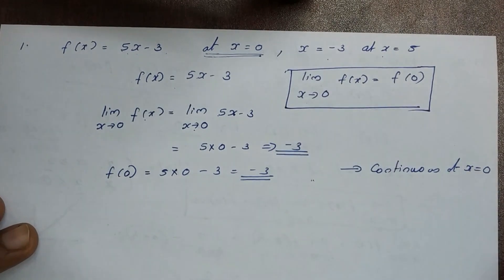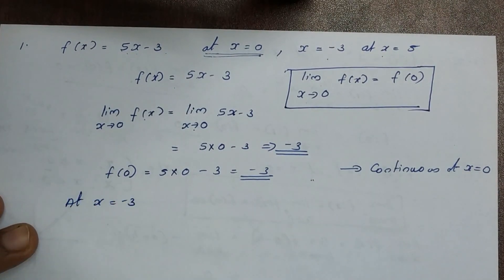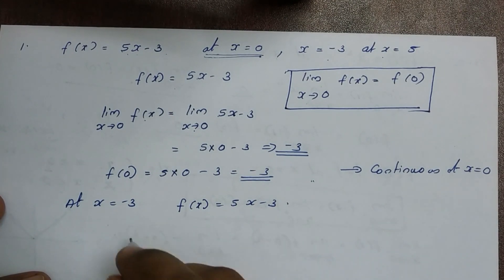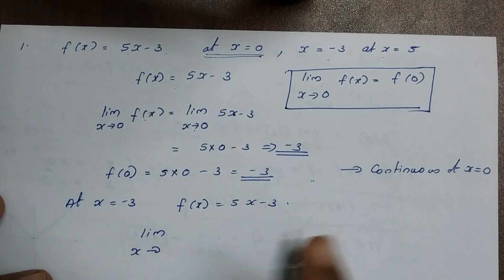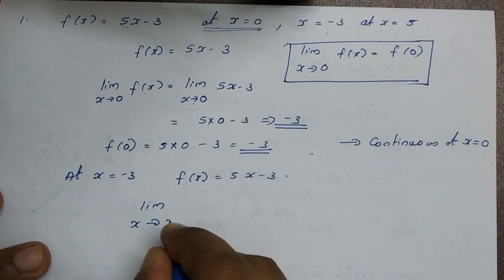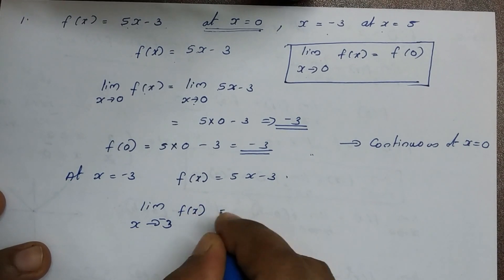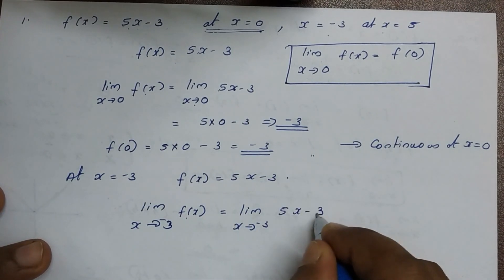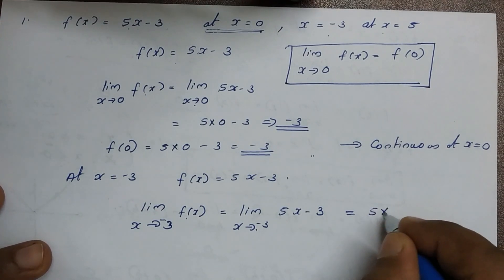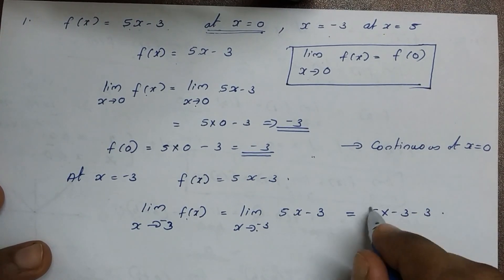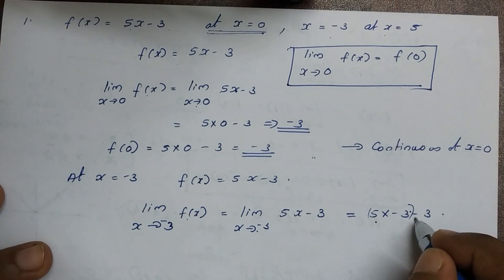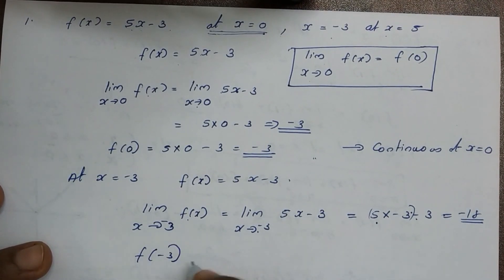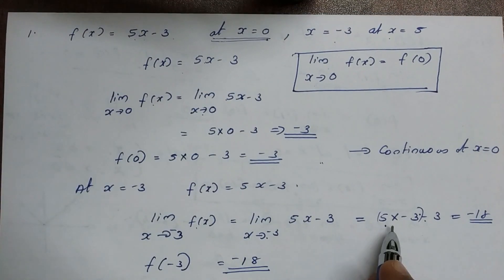At x = -3, f(x) = 5x-3. Limit x tends to -3 of f(x) equals limit x tends to -3 of (5x-3) equals 5(-3)-3 = -15-3 = -18. And f(-3) = -18. Since the limit equals f(-3), the function is continuous at x = -3.